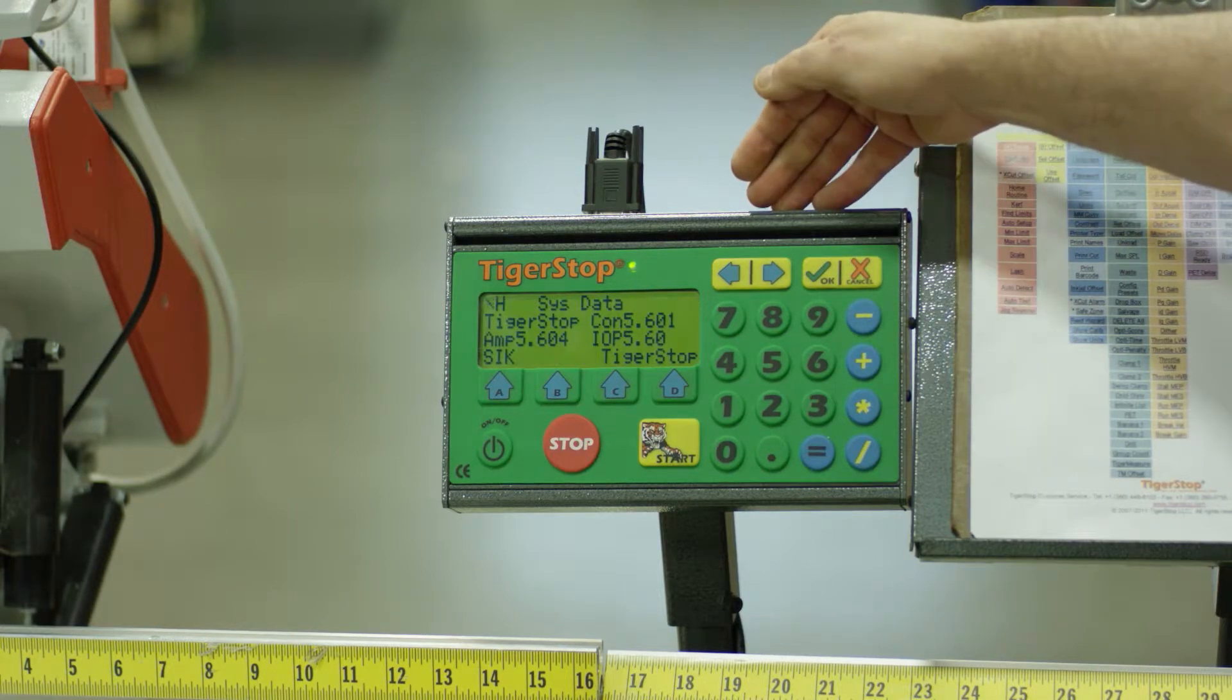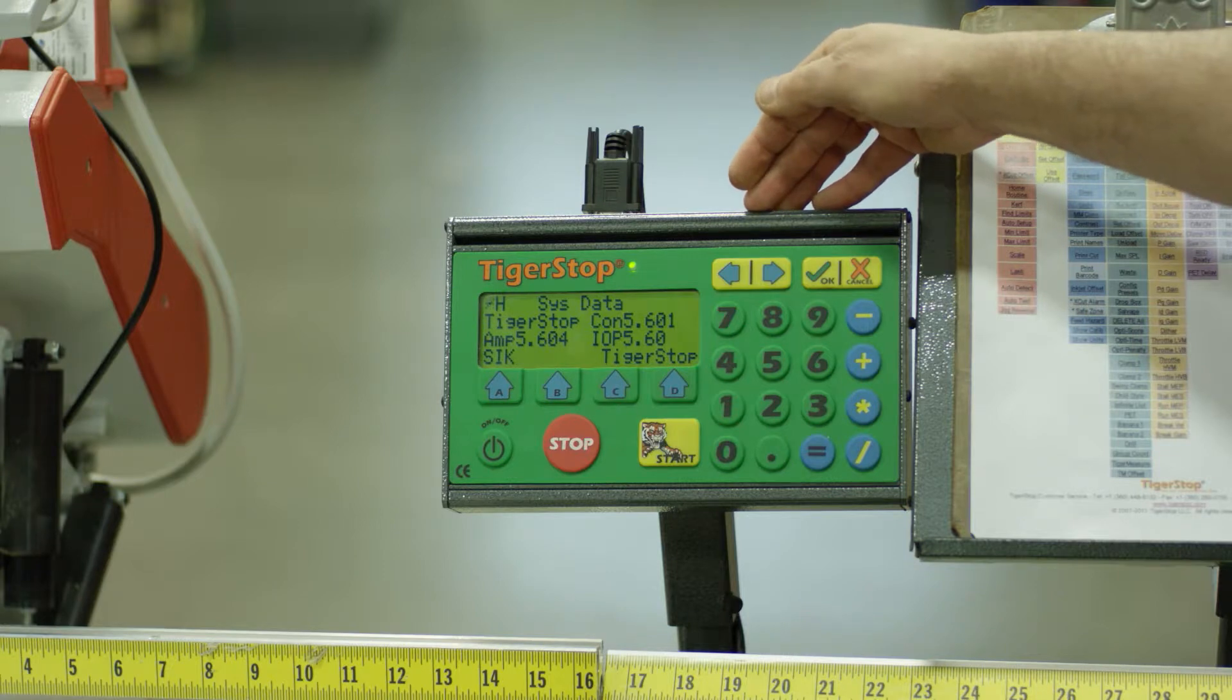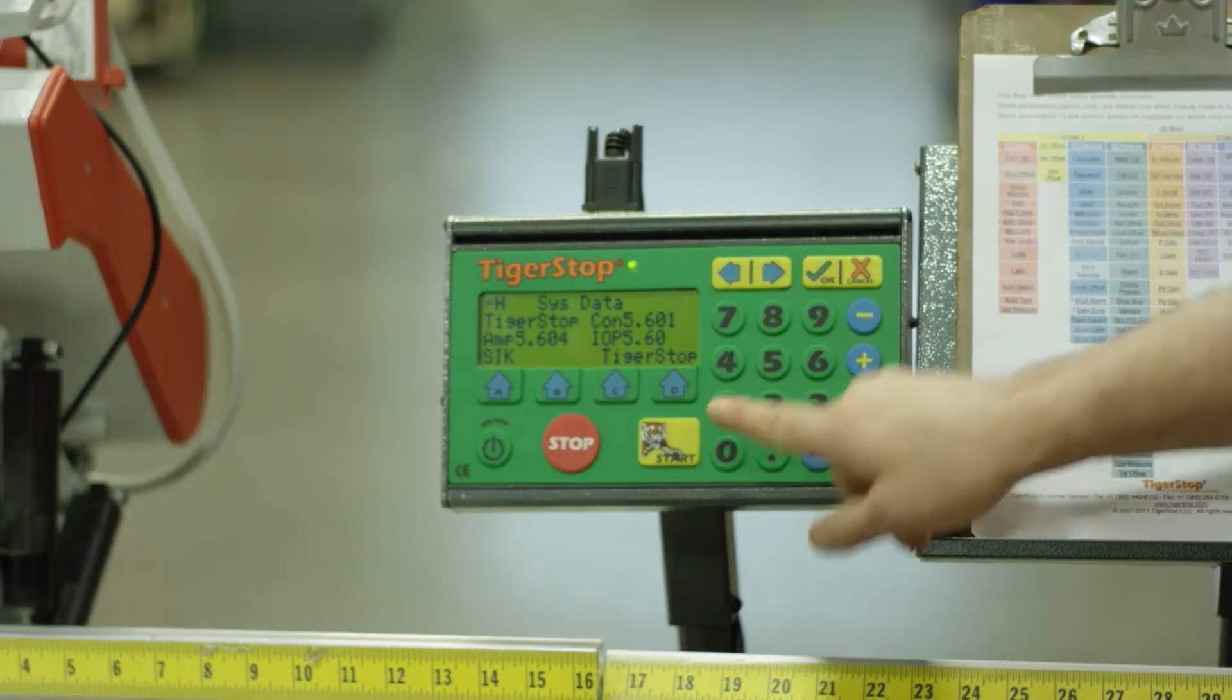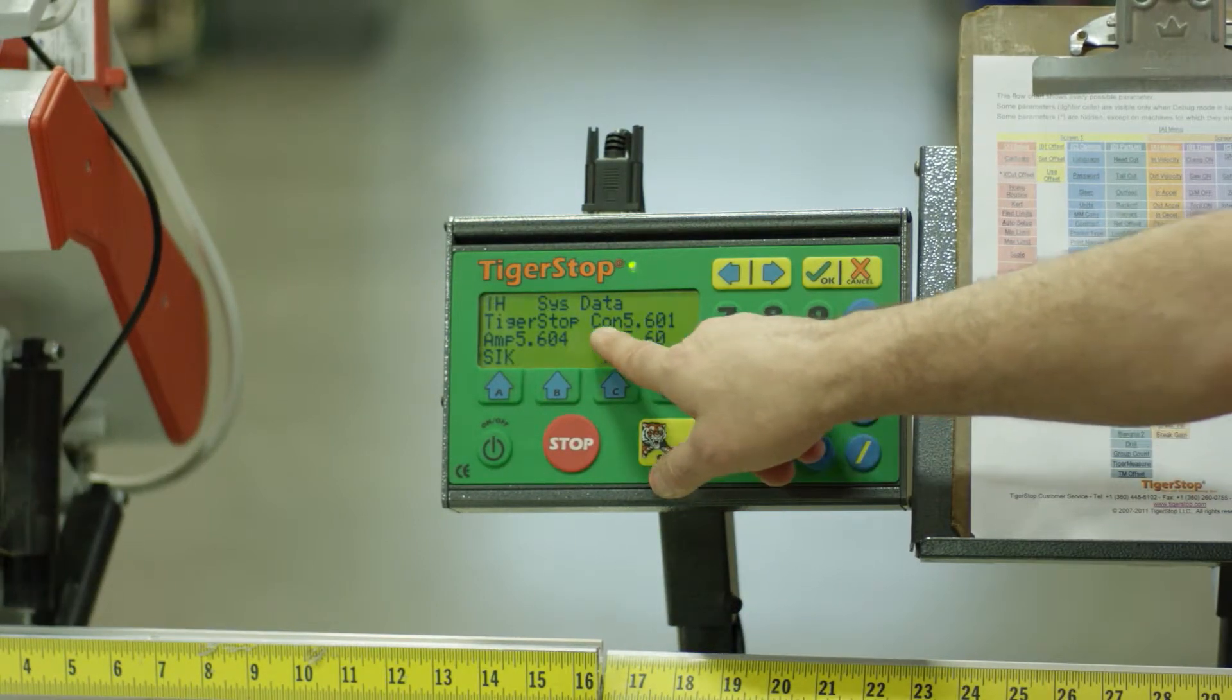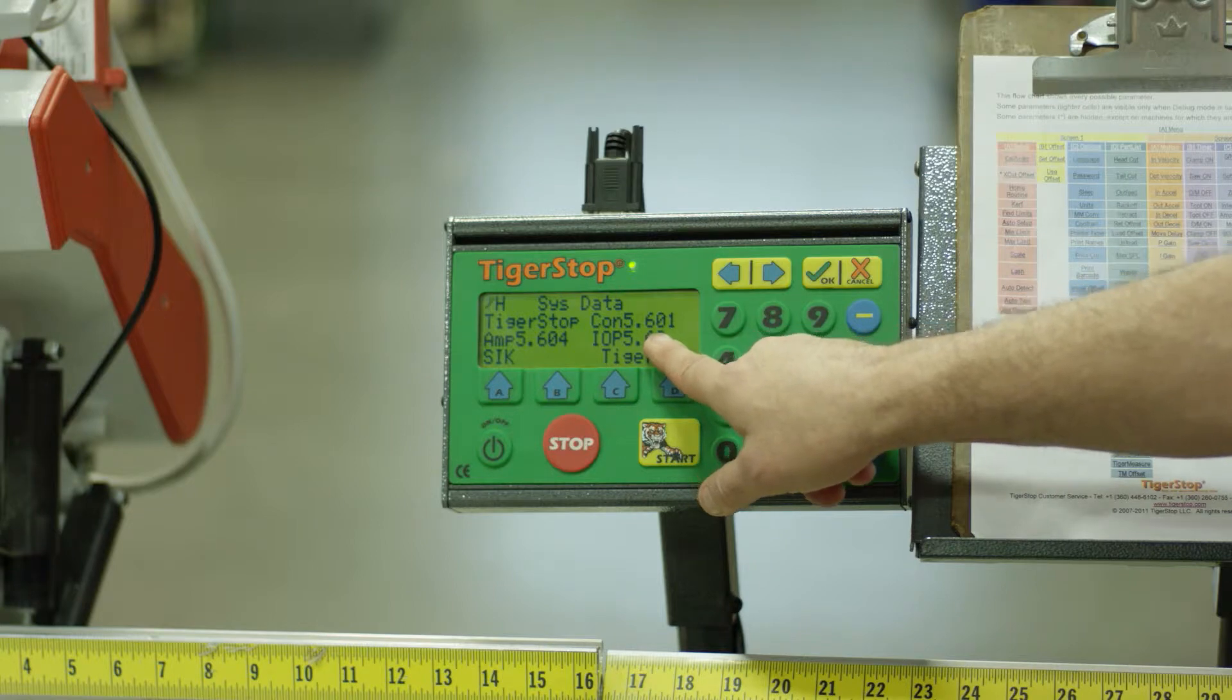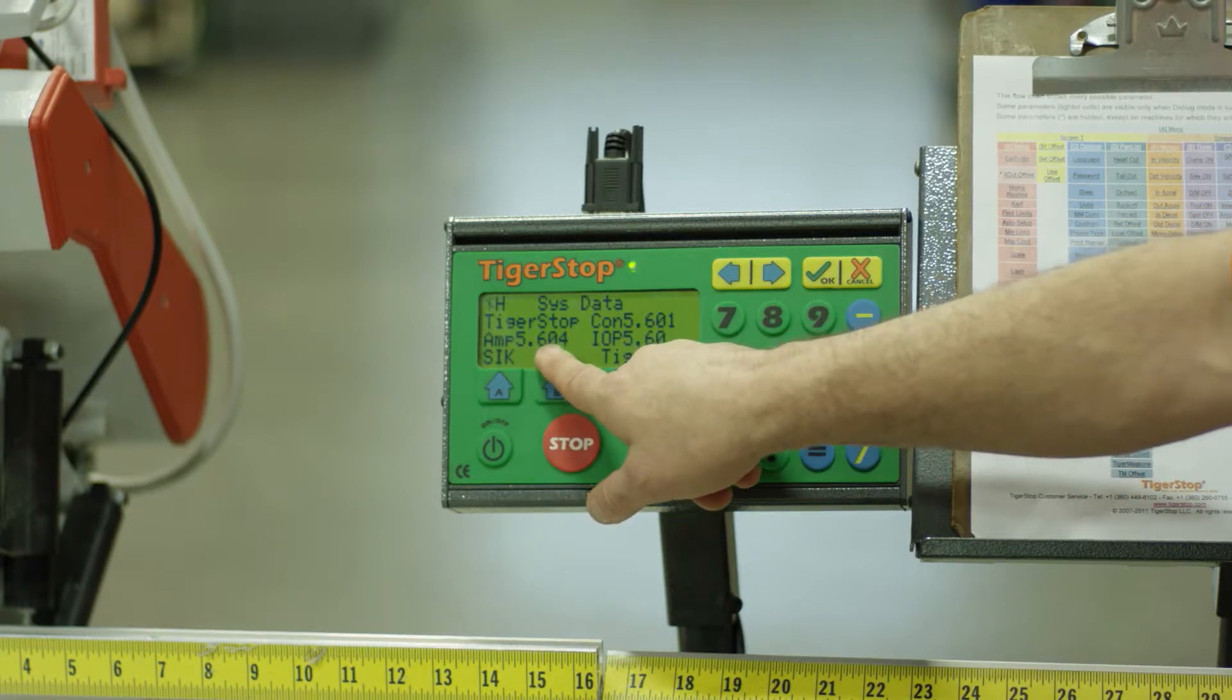you'll see now the TigerStop is going to tell you exactly what software version you have. Here the TigerStop is showing me in the controller 5.601. In the amplifier, it is showing me 5.604.